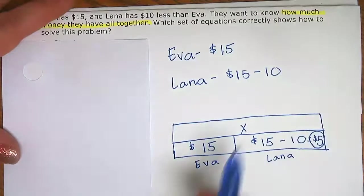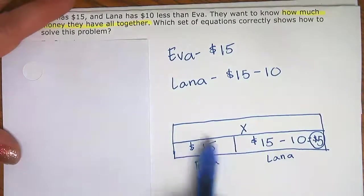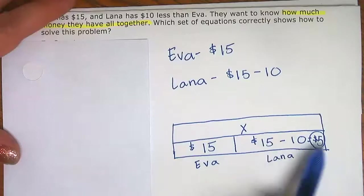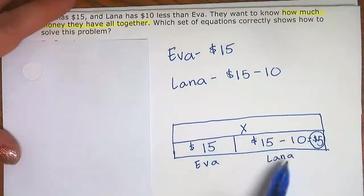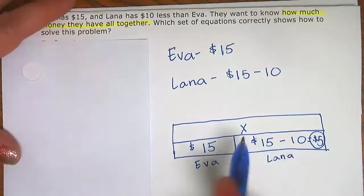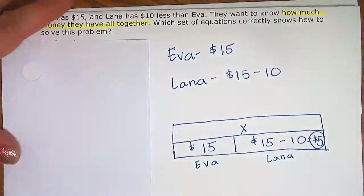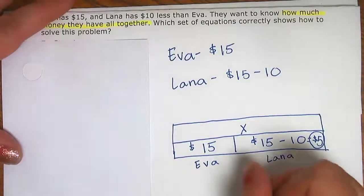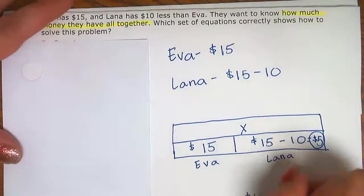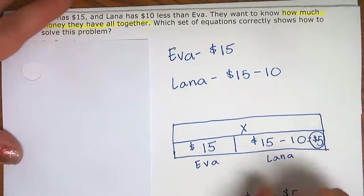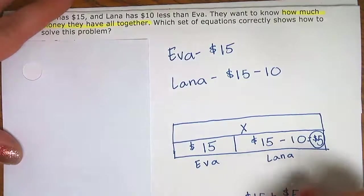So how do I find X? It's 15 for Eva plus 5 for Lana. So what is the value of X, which is their total together? X equals 15 for Eva plus $5 for Lana, so the value of X is $20.